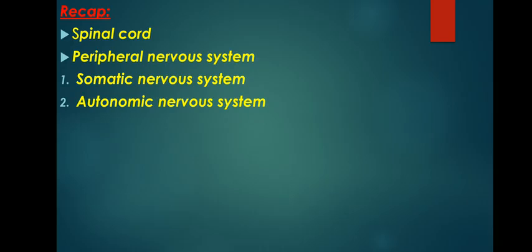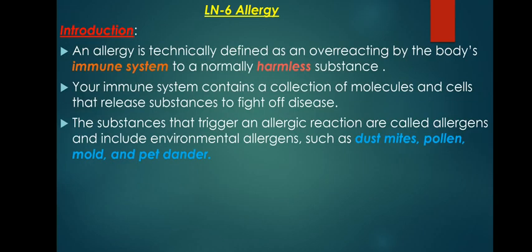The sympathetic nervous system prepares the body to expend energy to respond to the environment. The parasympathetic nervous system helps maintain normal body functions and conserve its resources.